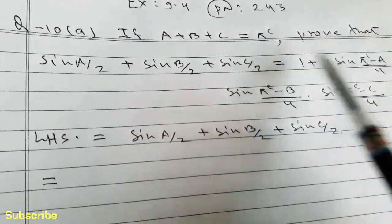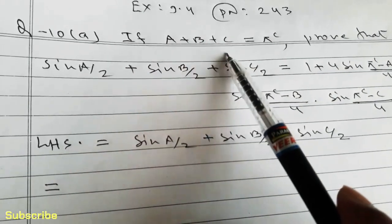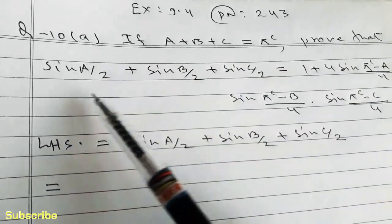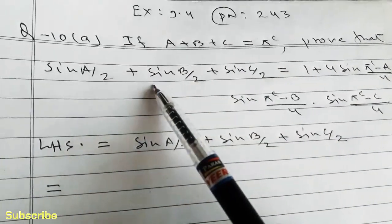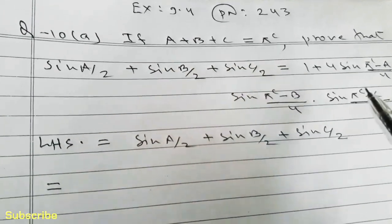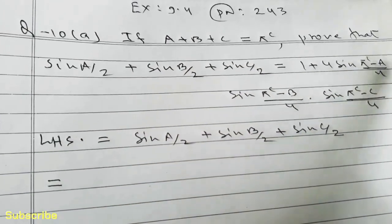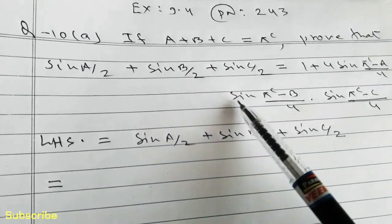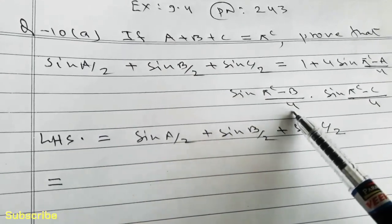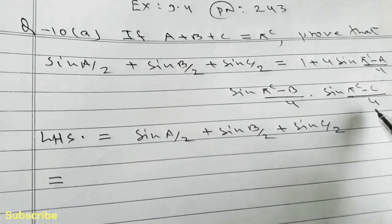In question number 10A we have to prove that if A plus B plus C is equal to pi radian, then sin A by 2 plus sin B by 2 plus sin C by 2 is equal to 1 plus 4 sin(π minus A by 4) into sin(π minus B by 4) into sin(π minus C by 4).